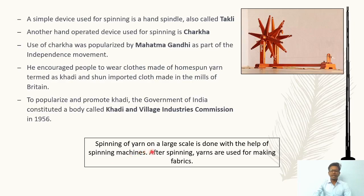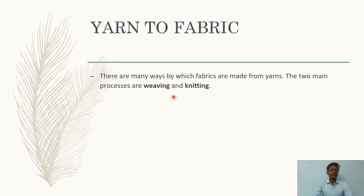Spinning of yarn on a large scale is done with the help of spinning machines. As mentioned earlier, nowadays machines are used to twist cotton and make yarn. After spinning, yarns are used for making fabrics. There are many ways by which fabrics are made from yarn — the two main processes are weaving and knitting.